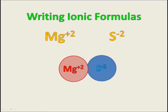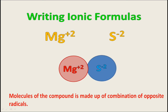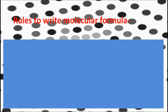While writing the molecular formula of a compound, we know that every compound is made up of two radicals: electropositive radicals and electronegative radicals. While writing the ionic formula, we separate these radicals with their formula. The molecule of a compound is made up of a combination of opposite radicals. For example, magnesium sulfide is made up of Mg²⁺ ions and S²⁻ ions. While writing molecular formula we follow these rules.